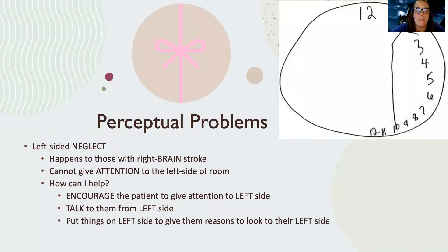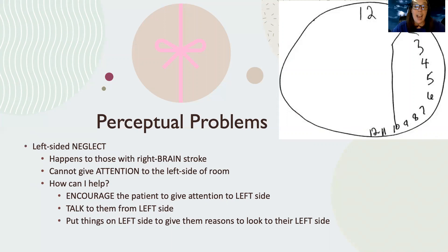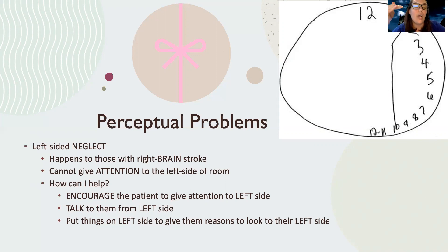There can also be perceptual problems. People get perceptual and vision problems mixed up a lot, so hopefully I can break these down and help differentiate them so they're not as confusing. First, there's what's called left-sided neglect. Now, left-sided neglect actually happens with people that have had a right-side brain stroke. So if you've had a right hemispheric stroke, you're at high risk to have left-sided neglect.